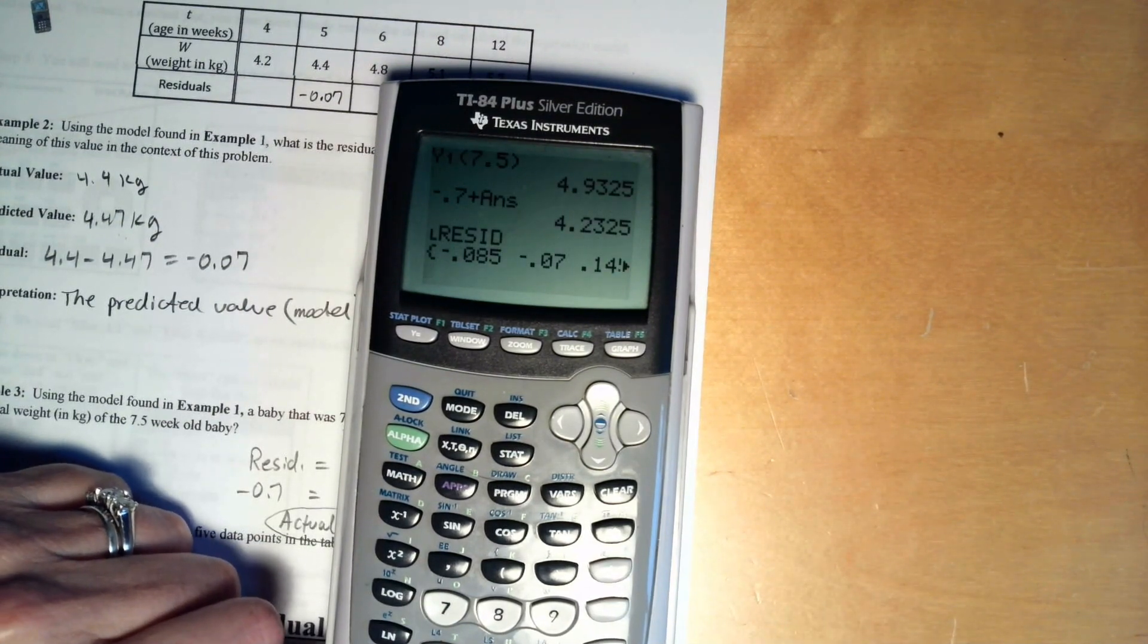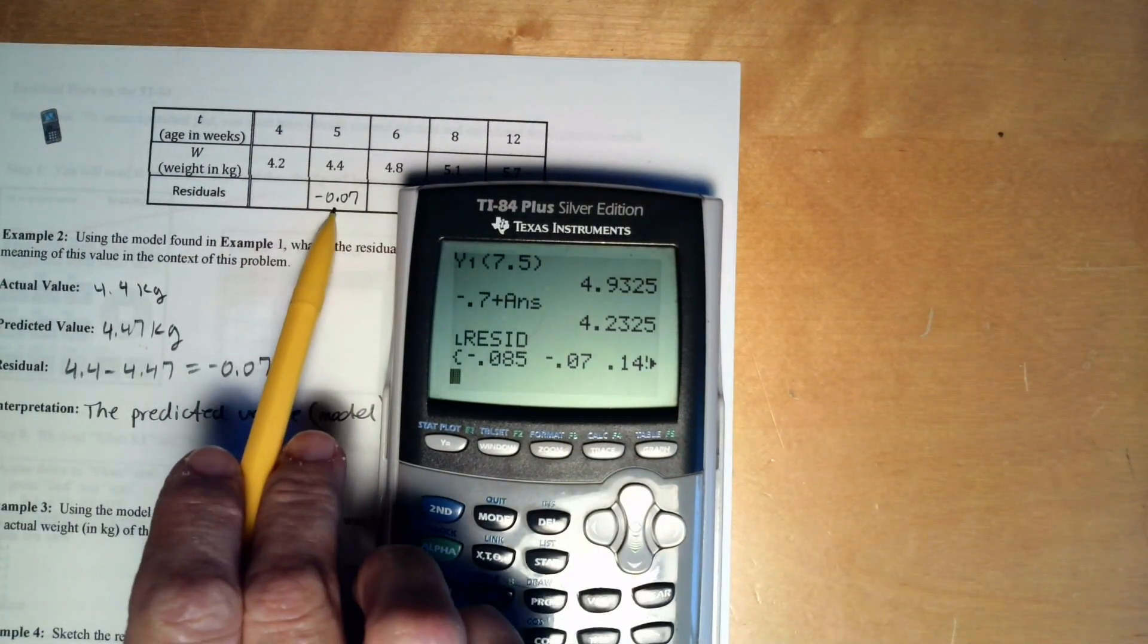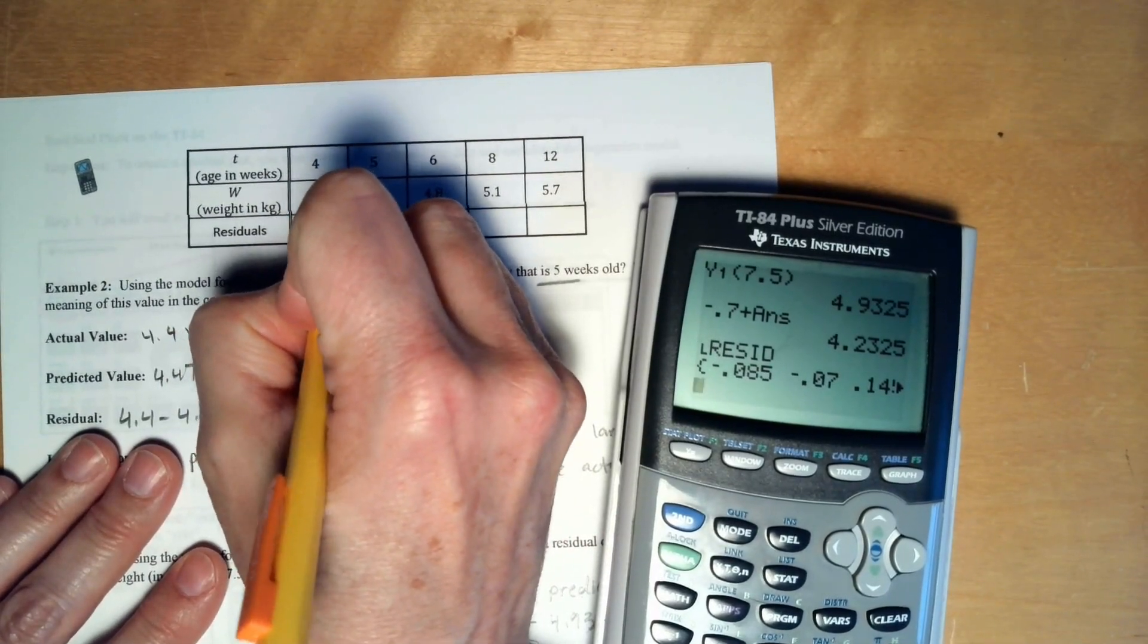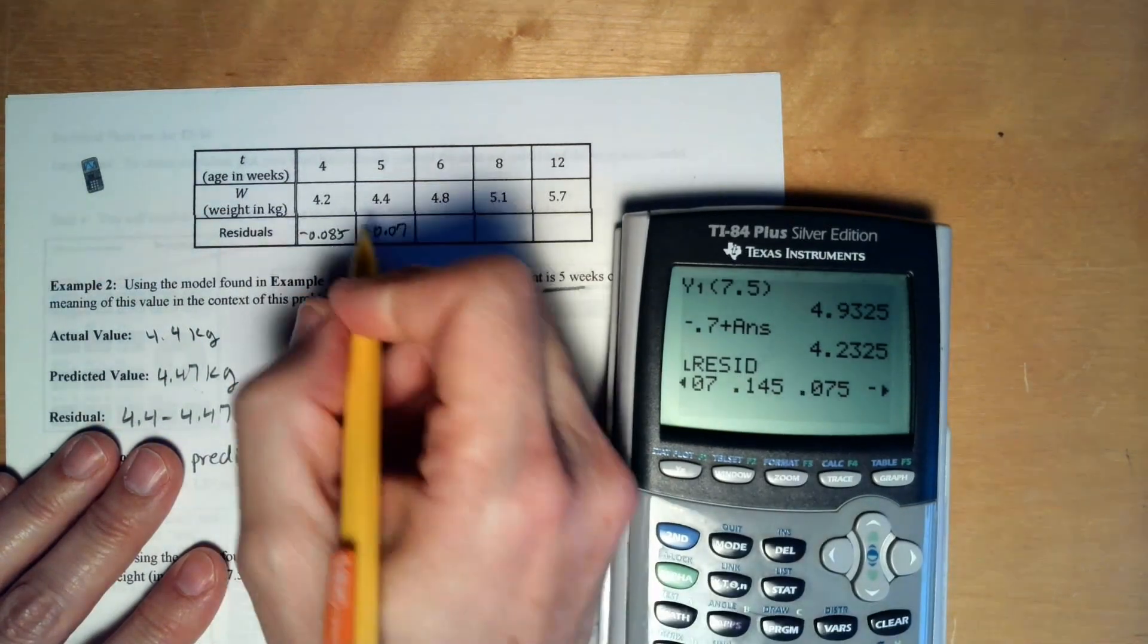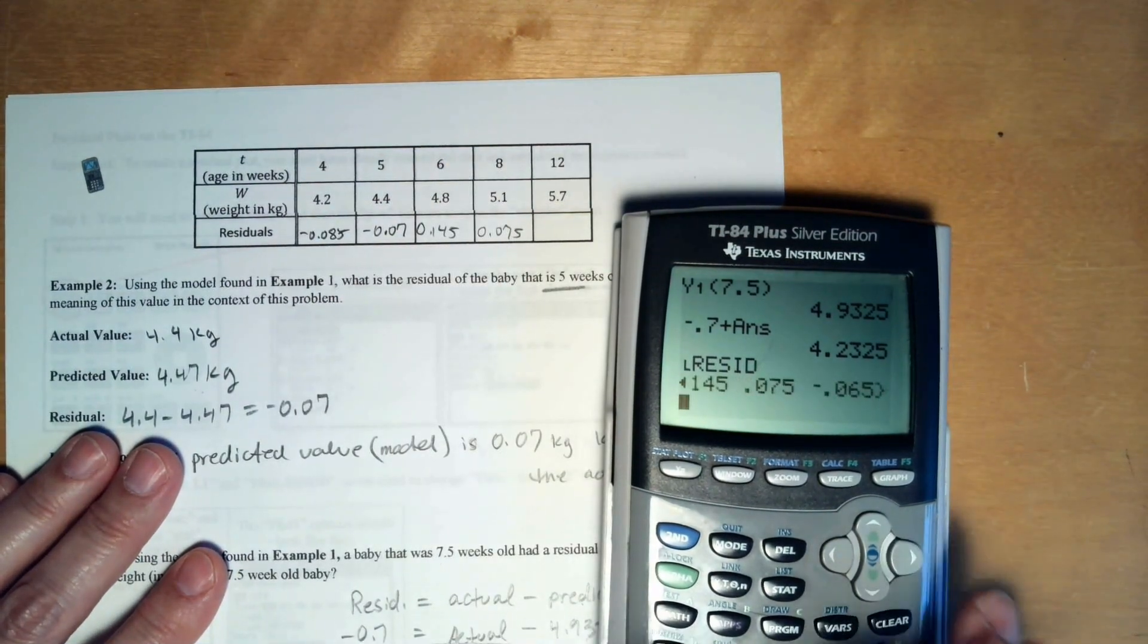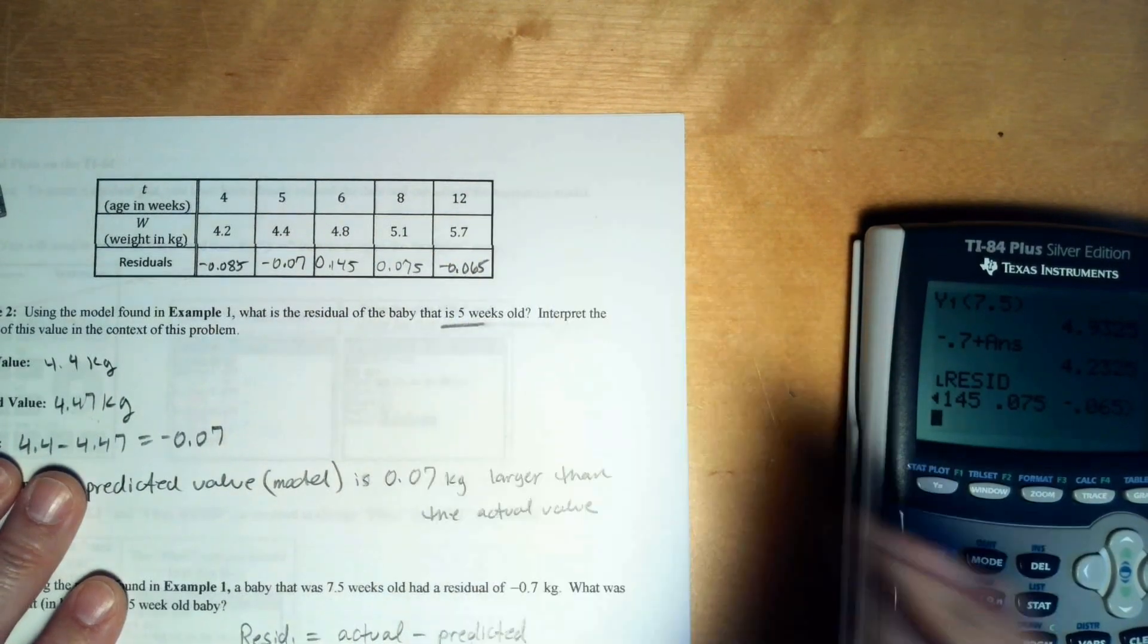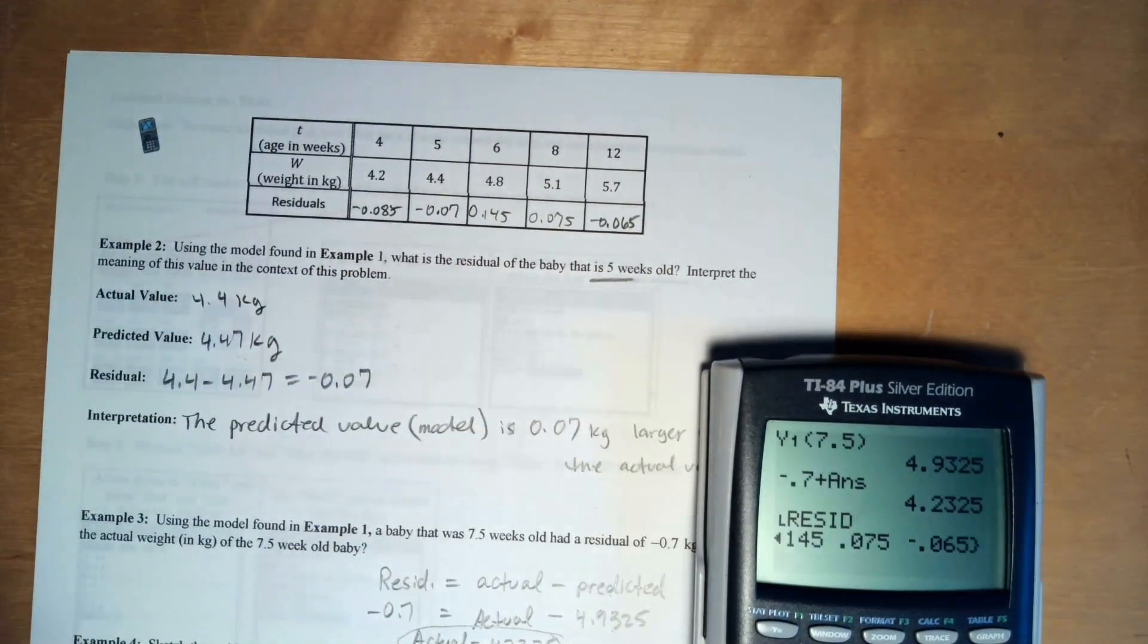And look at that, there's our residuals. There's that one that we just put in. So let's go ahead and put the others. Negative 0.085. And if you just move to the right, 0.145, and 0.075, and negative 0.065. So anyway, we can see that above, below, above, below, like whatever.